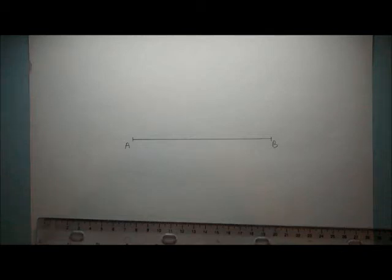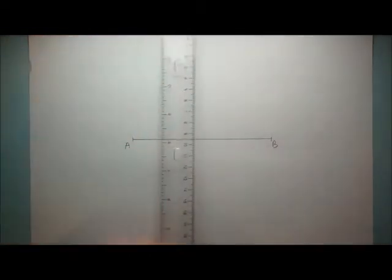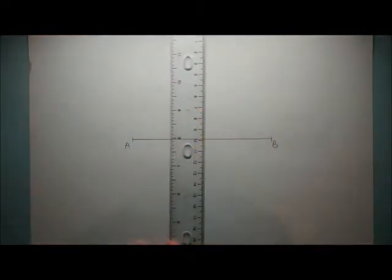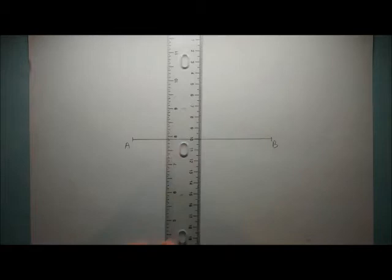In this video we're going to find out how to construct a perpendicular bisector of line AB. Perpendicular means that it's at 90 degrees to AB and bisector means it's going to cut AB exactly in half so that this half will equal this half.